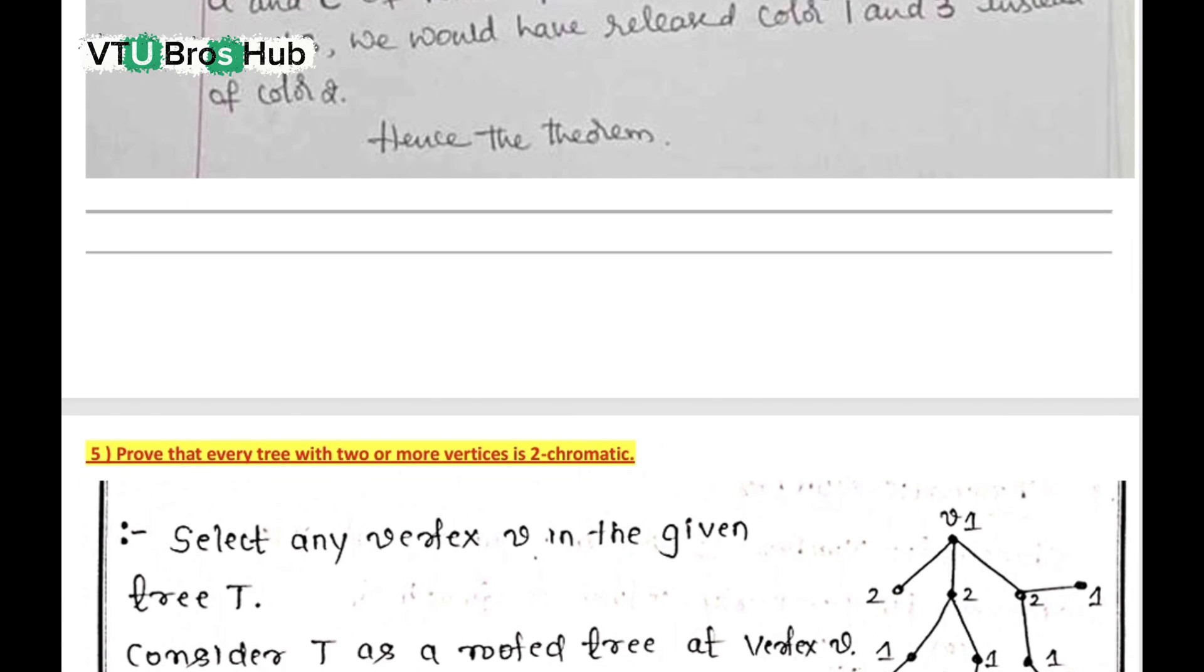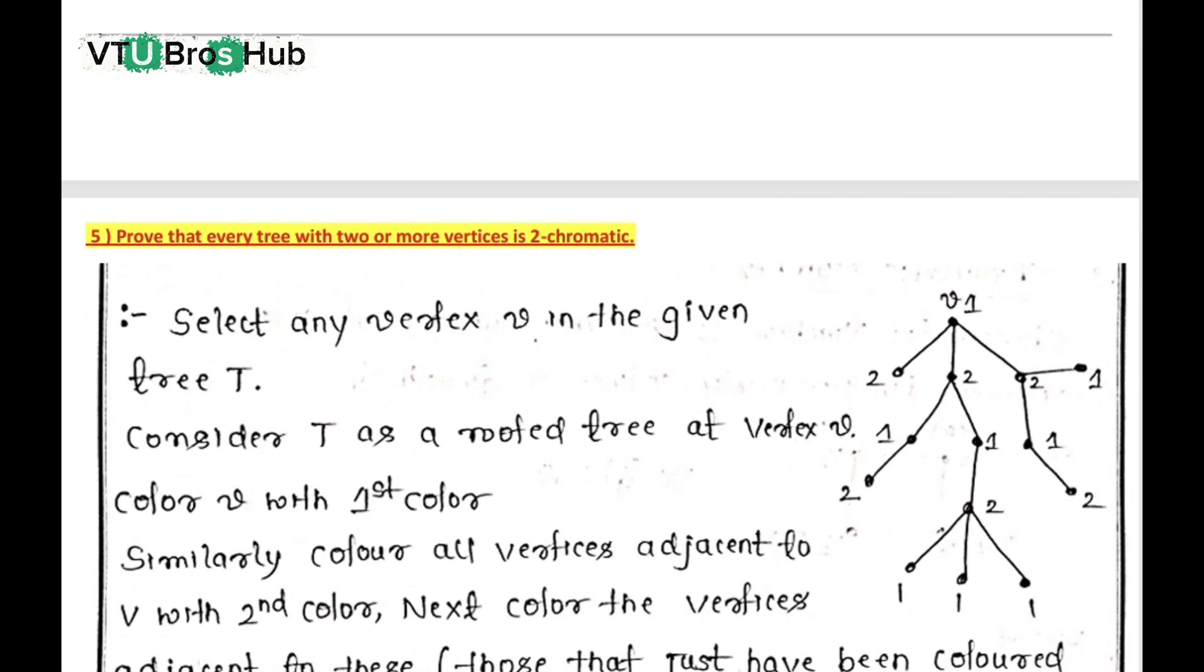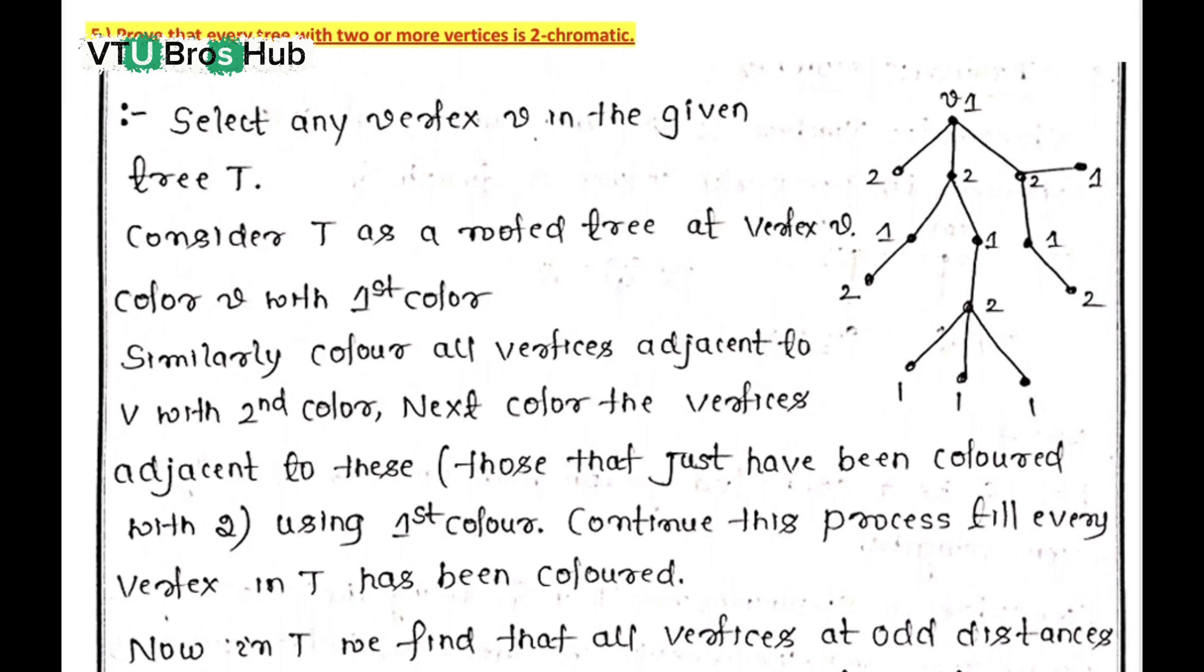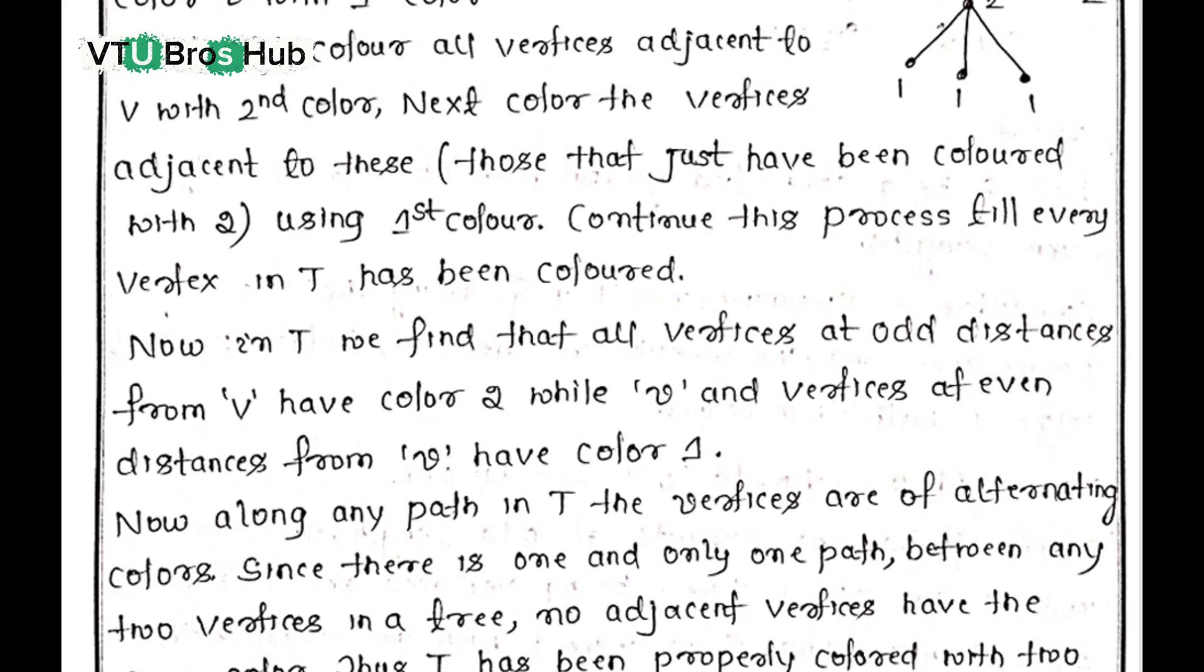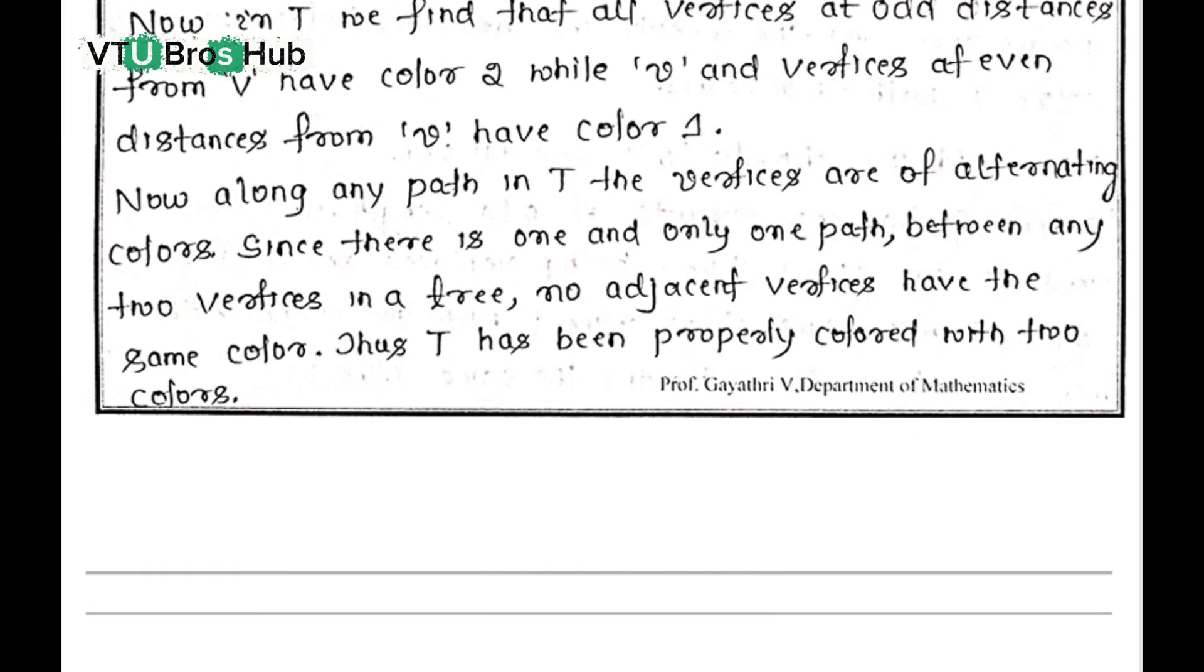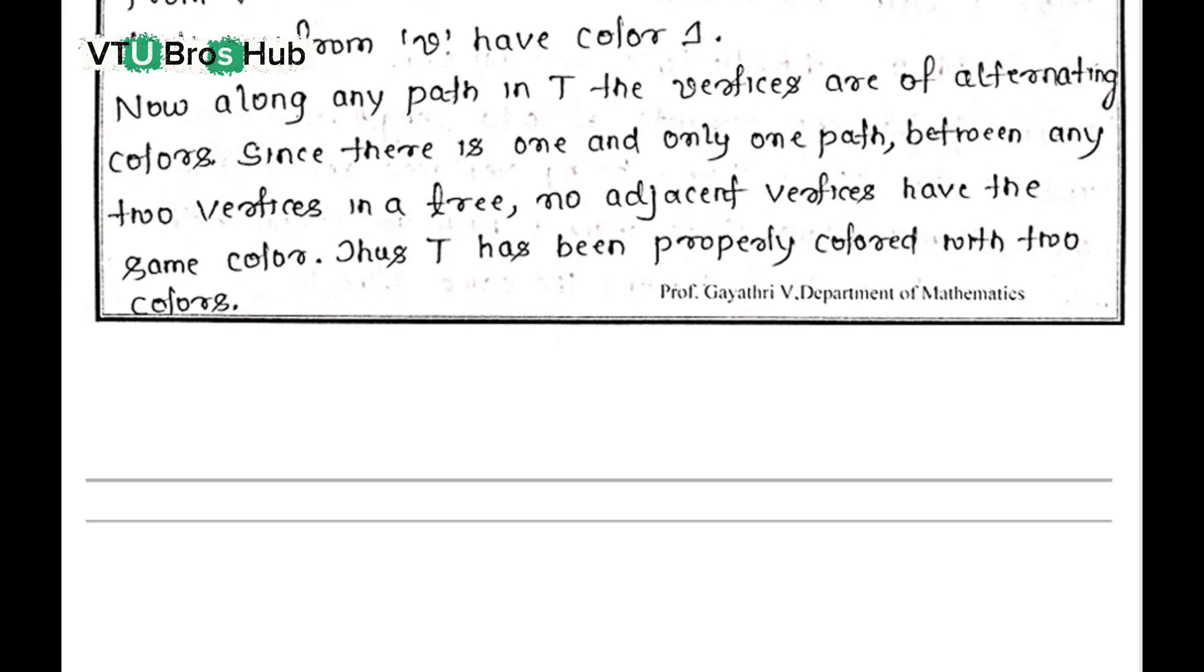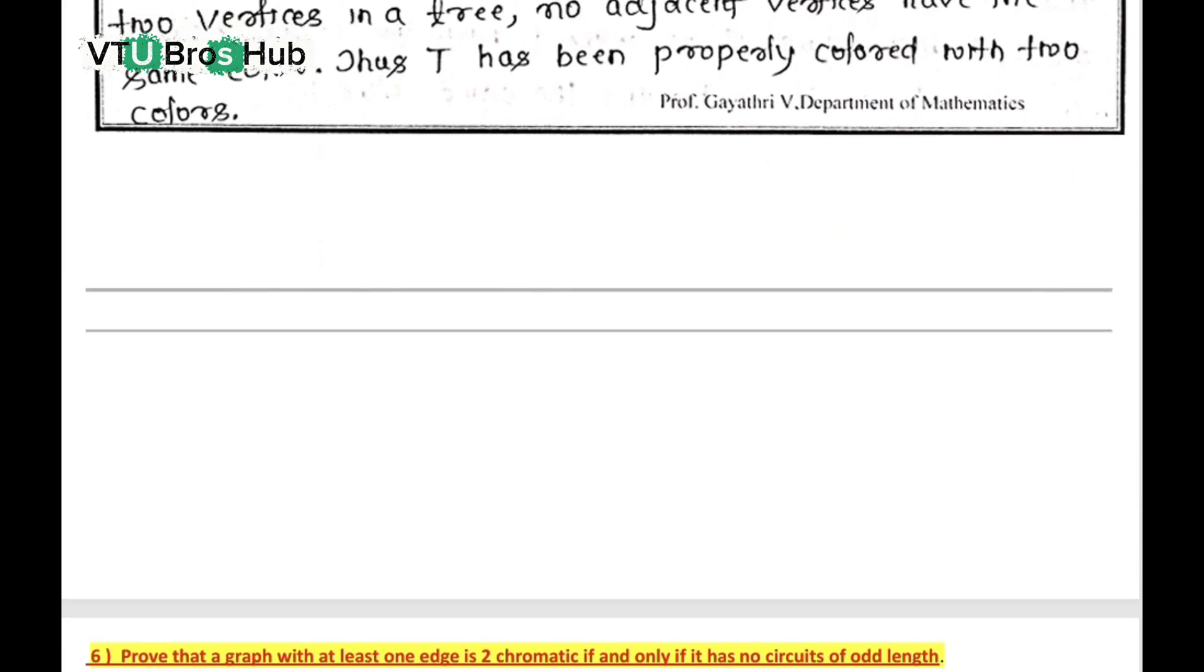Prove that every tree with two or more vertices is 2-chromatic. This is a popular exam question. Any tree with two or more vertices is always 2-chromatic. This is because trees do not have cycles. So we can alternate two colors while coloring levels. Refer to the answer shown now. It explains this using a simple tree graph.